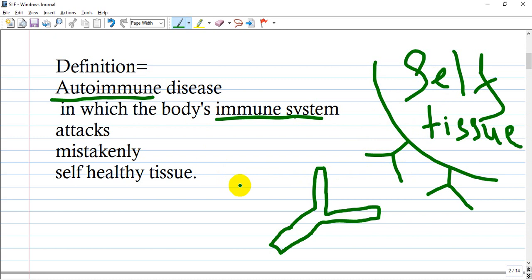During exacerbation, our immune system produces even more of these antibodies to self tissue and causes destruction and more inflammation throughout the body.